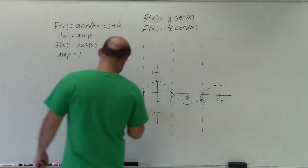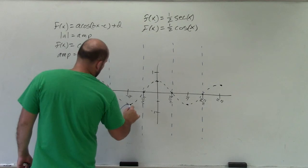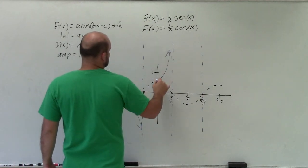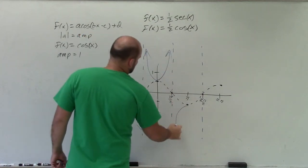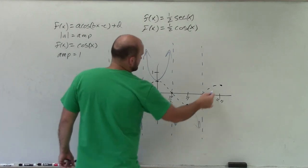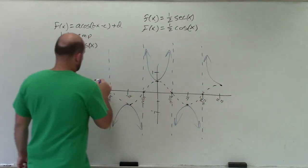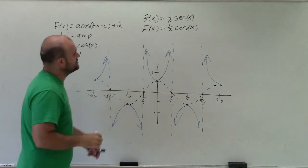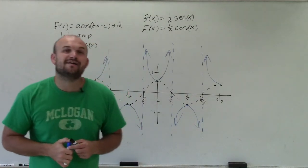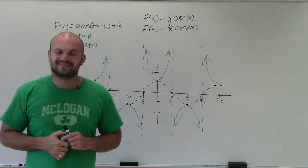And then to round off my graph, I'm just going to make parabolas going in the opposite directions. So there you go, ladies and gentlemen. That is how you graph the function f(x) = (1/2)sec(x). Thanks.